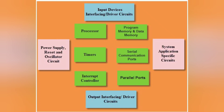Next is program memory and data memory. Embedded systems play the most important role in automation systems. They require data storage, so embedded systems require both program memory and data memory. These are sometimes called user memory and code memory. Flash memory is basically recently used in embedded systems; before that, EEPROM memory was used.